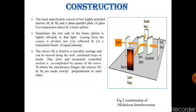The mirror M1 is fixed to a movable carriage and can be moved along the well-machined waves or tracks. This slow and accurately controlled motion is accomplished by means of the screw. To obtain the interference fringes, the mirrors M1 and M2 are made exactly perpendicular to each other.